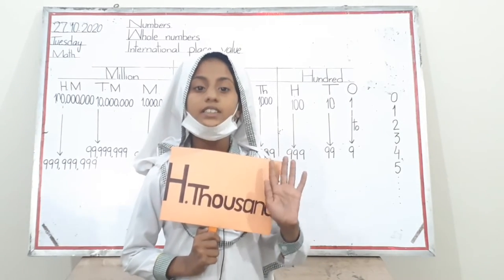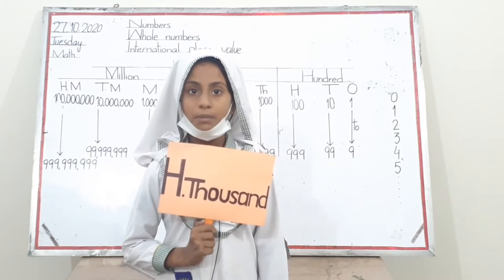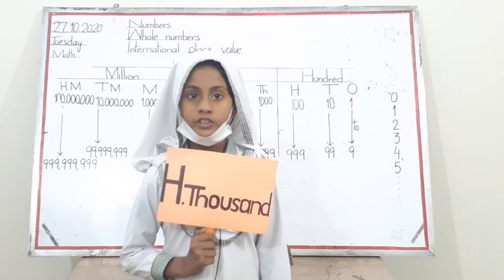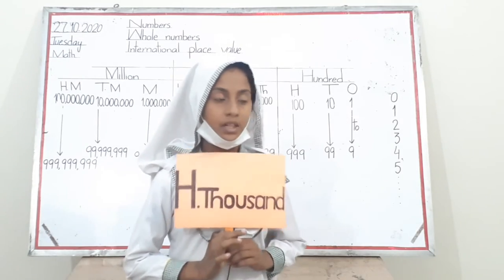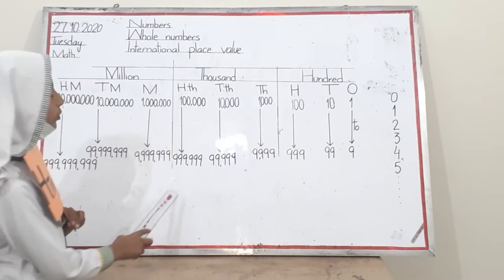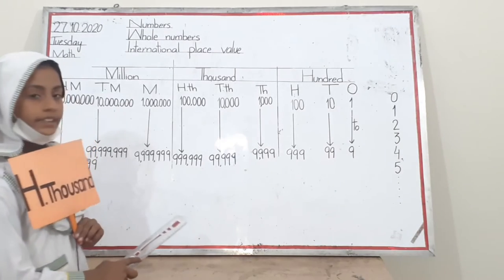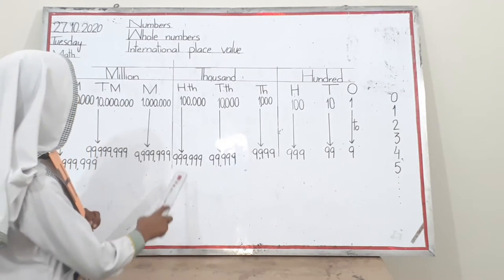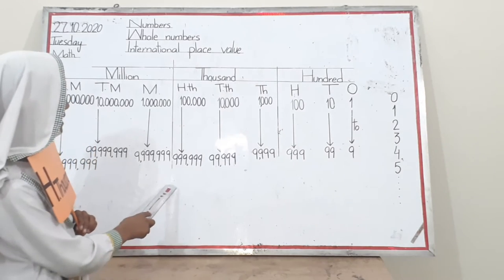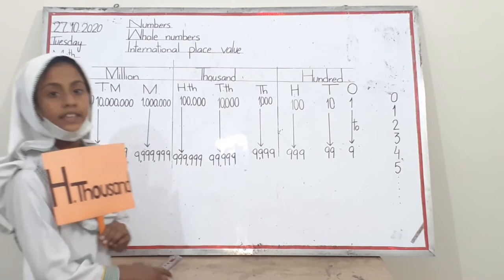Hi friends, I am one hundred thousand, a member of the thousand family. I show six digits, for example one hundred thousand to nine hundred ninety-nine thousand nine hundred and ninety-nine. My smallest number is one hundred thousand and my biggest number is nine hundred ninety-nine thousand nine hundred and ninety-nine. Thanks.